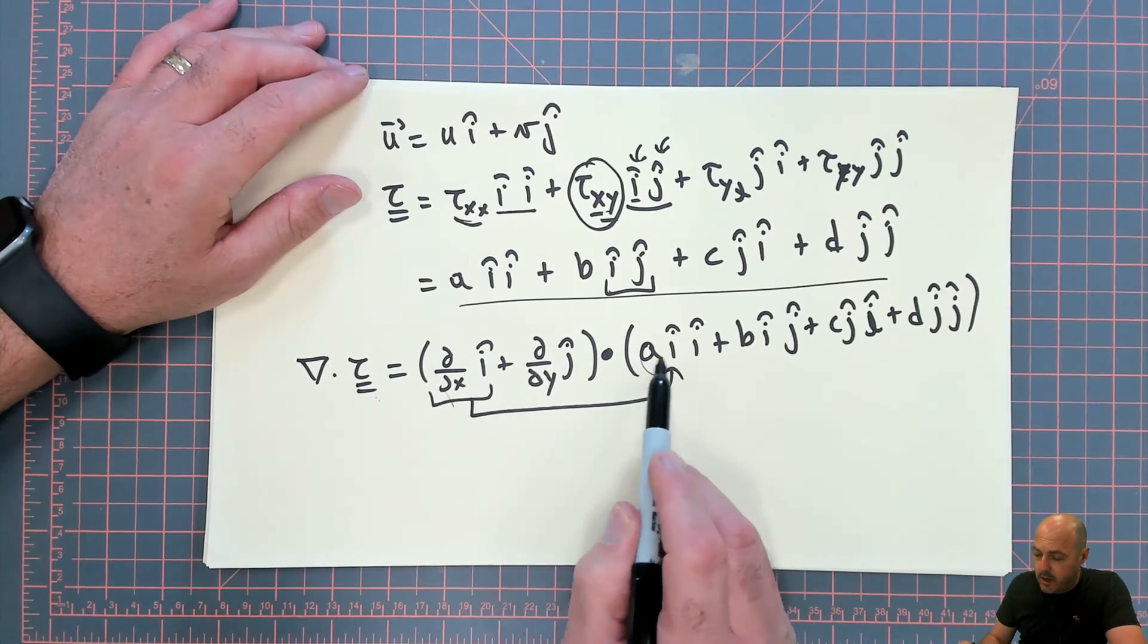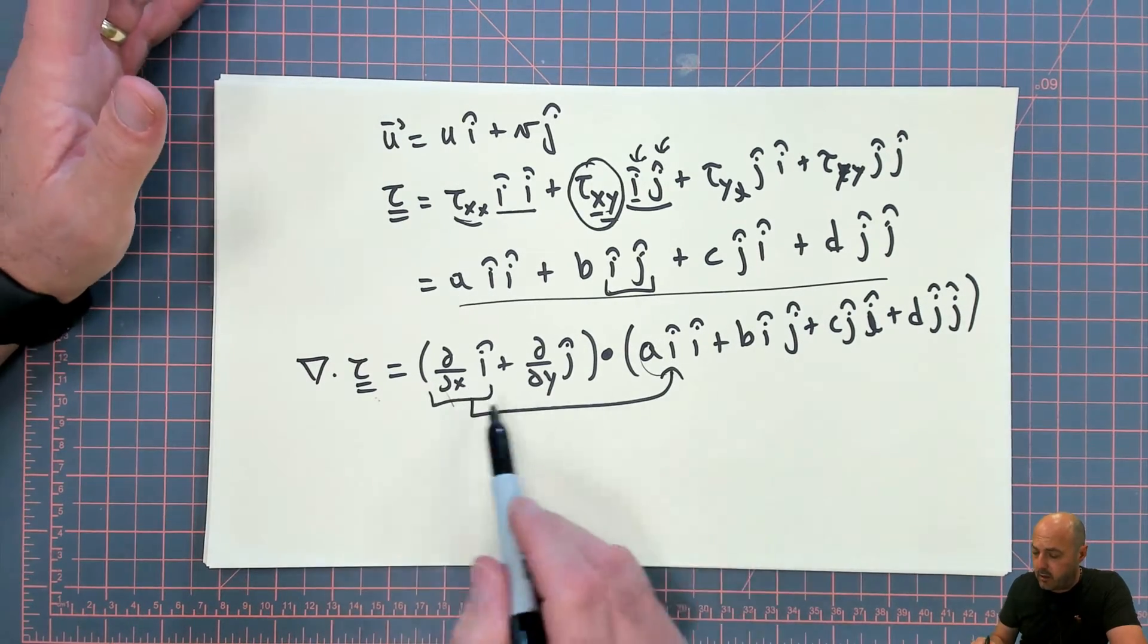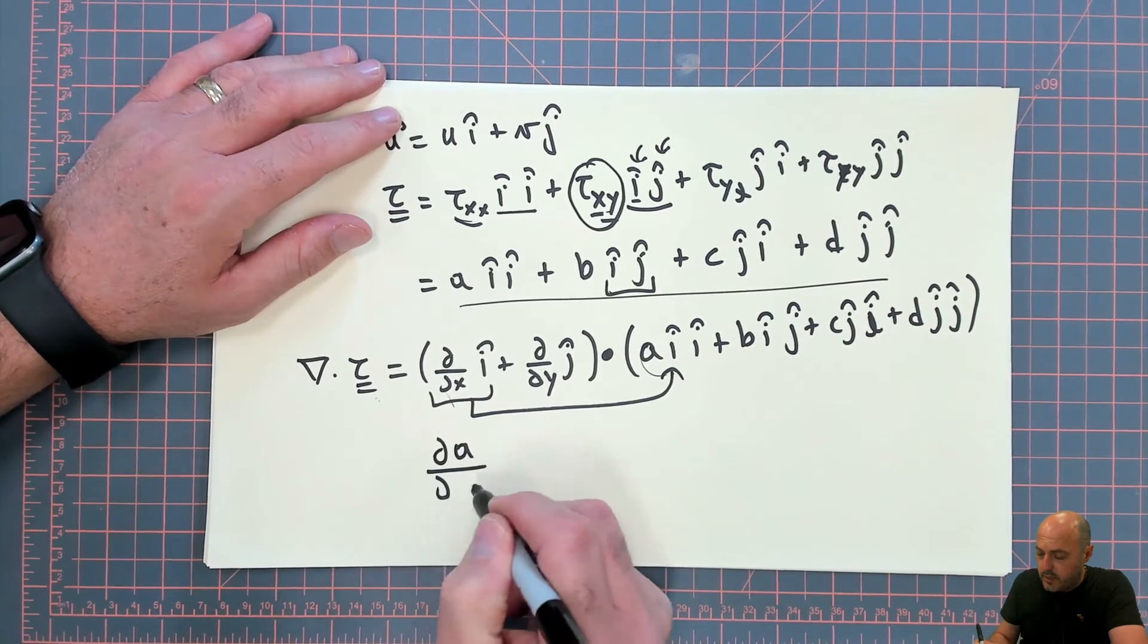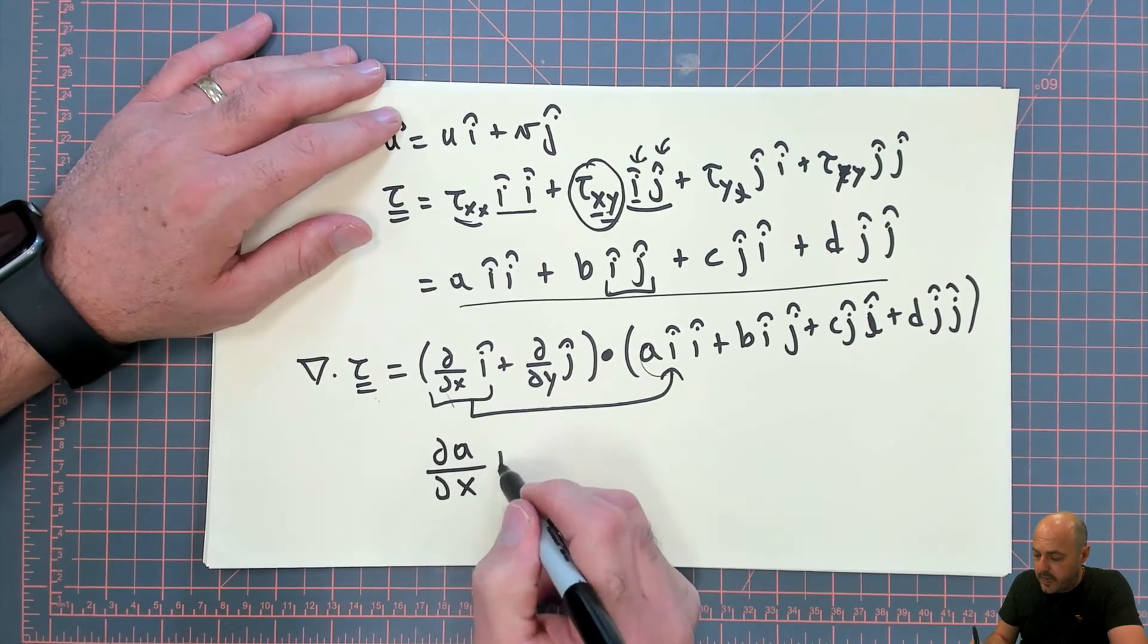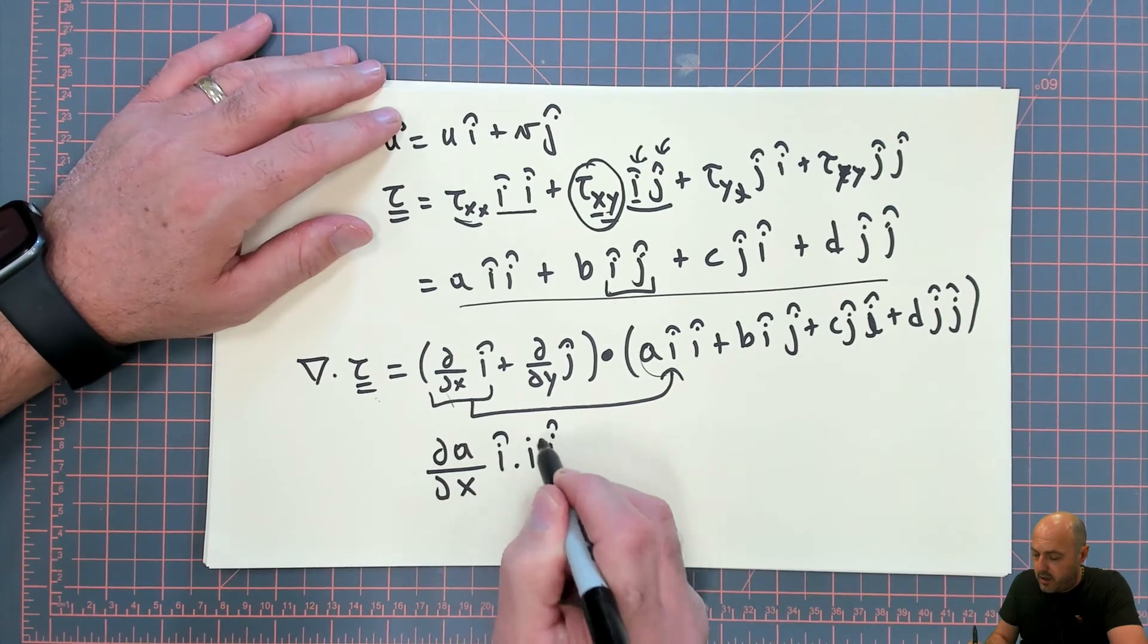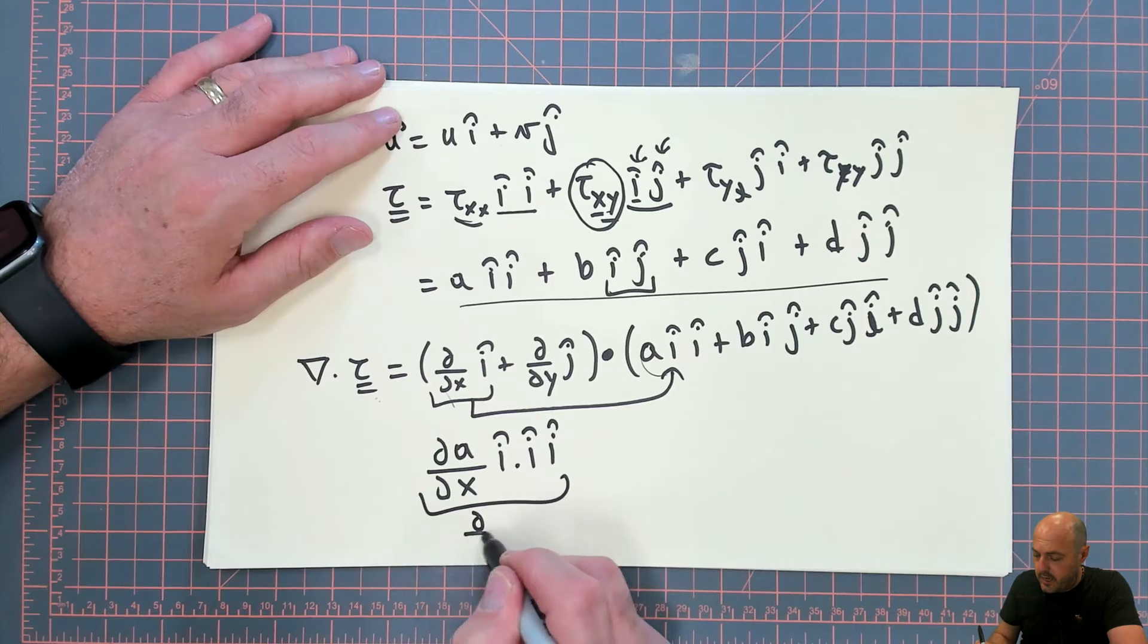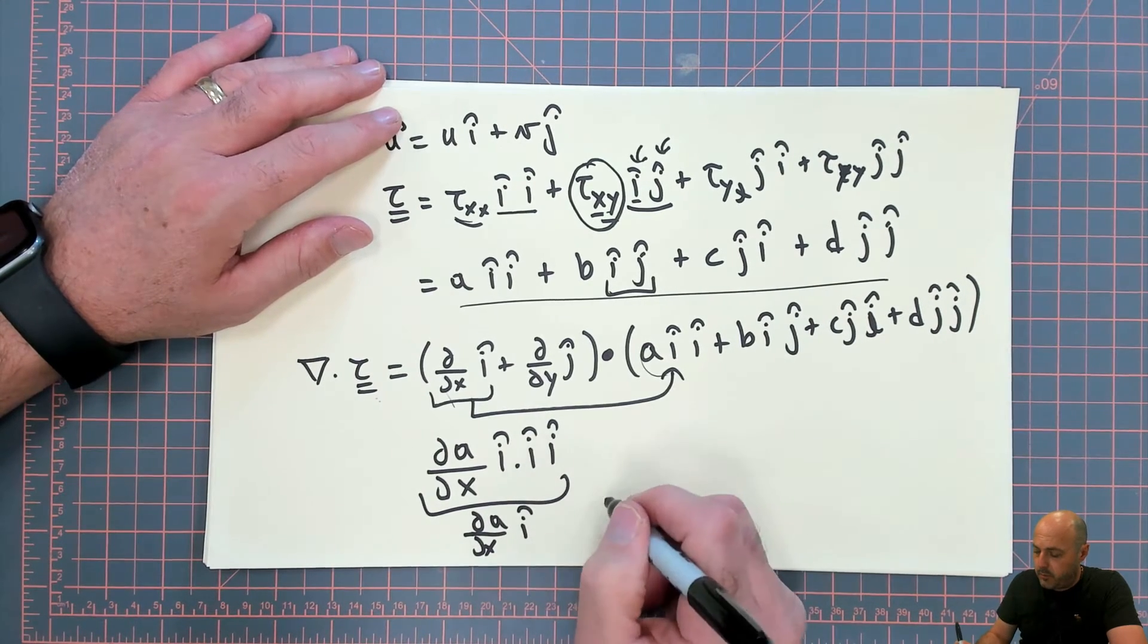And because i i i are constant along x, et cetera, then it's just simply a matter. This turns into a simple dot product dA/dx of i dot i i. And i dot i is 1, so that gives you dA/dx i plus,